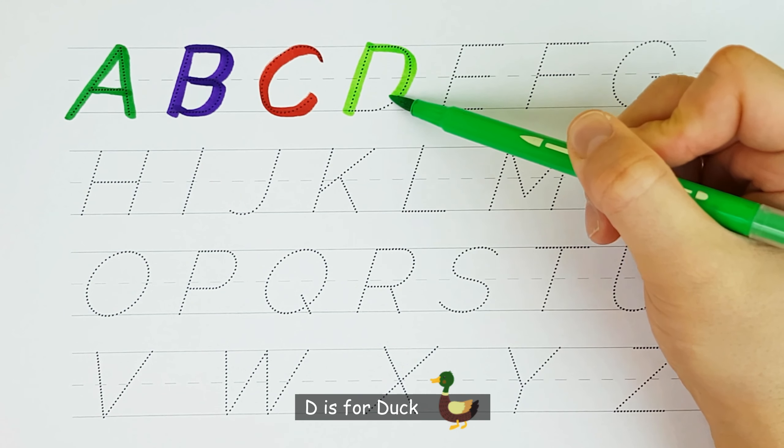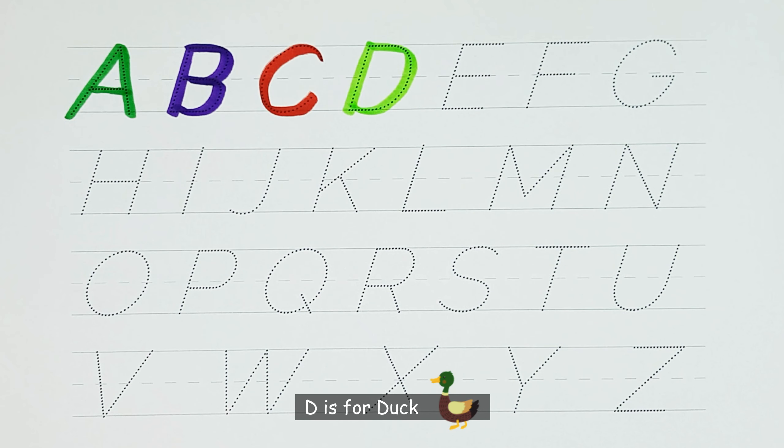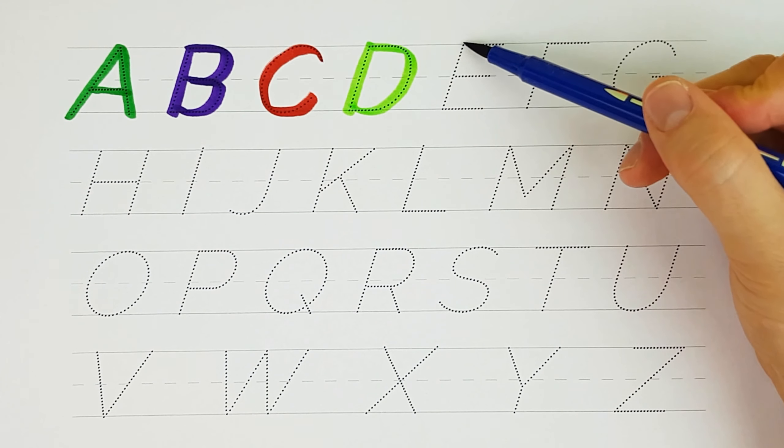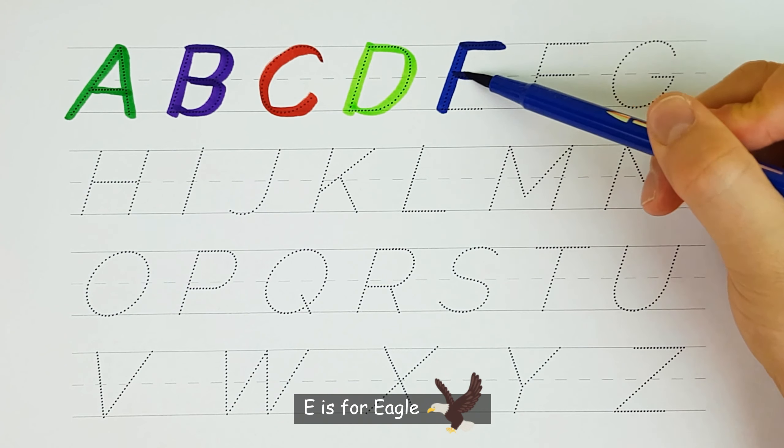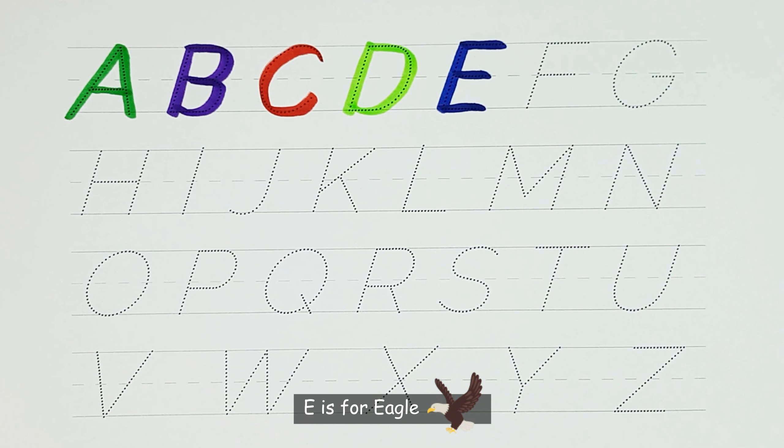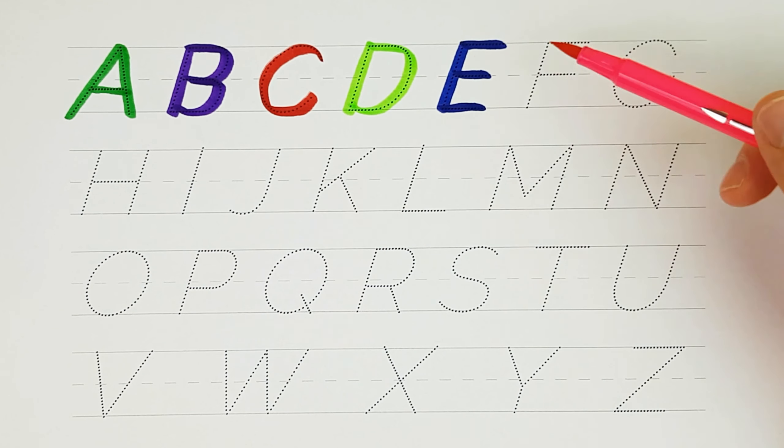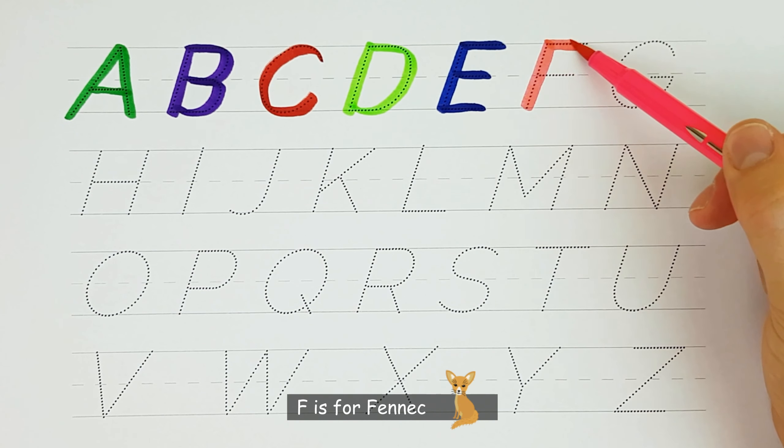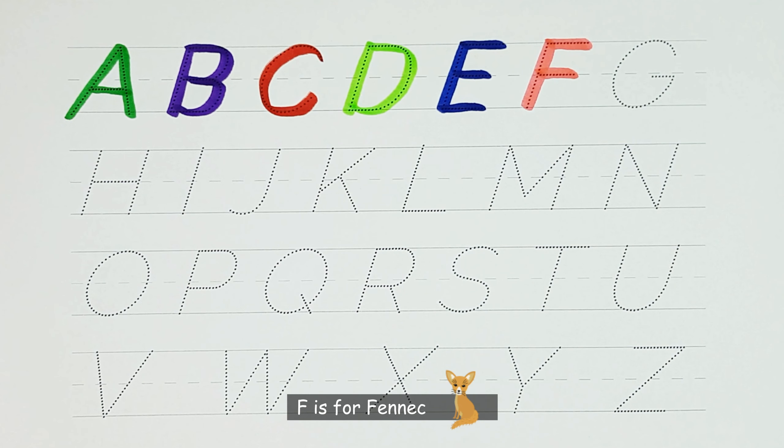D. D is for duck. E. E is for eagle. F. F is for fennec.